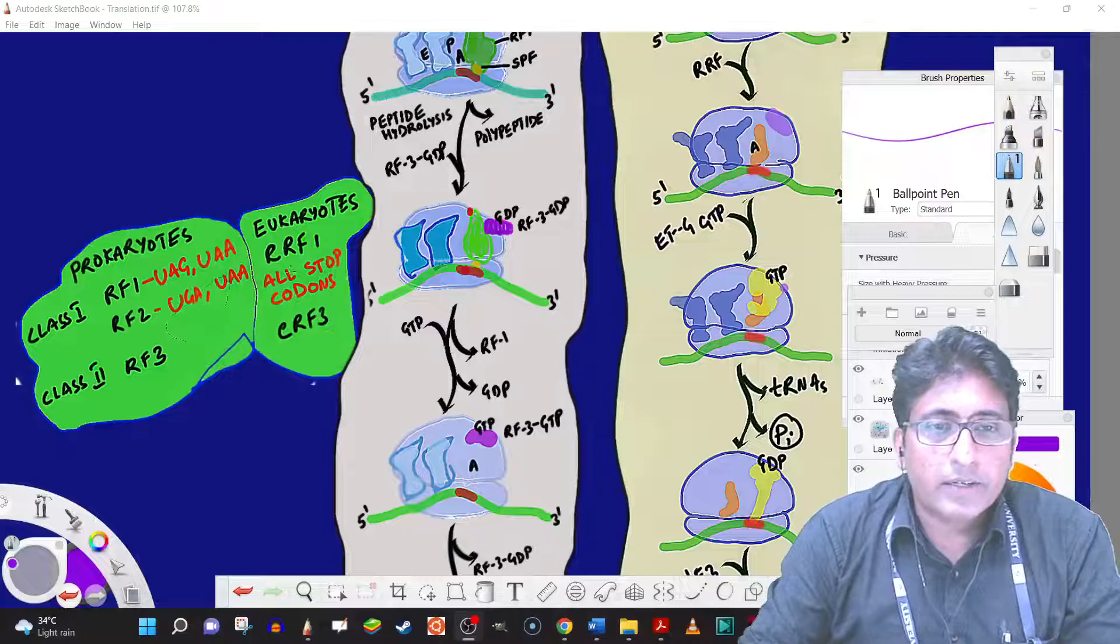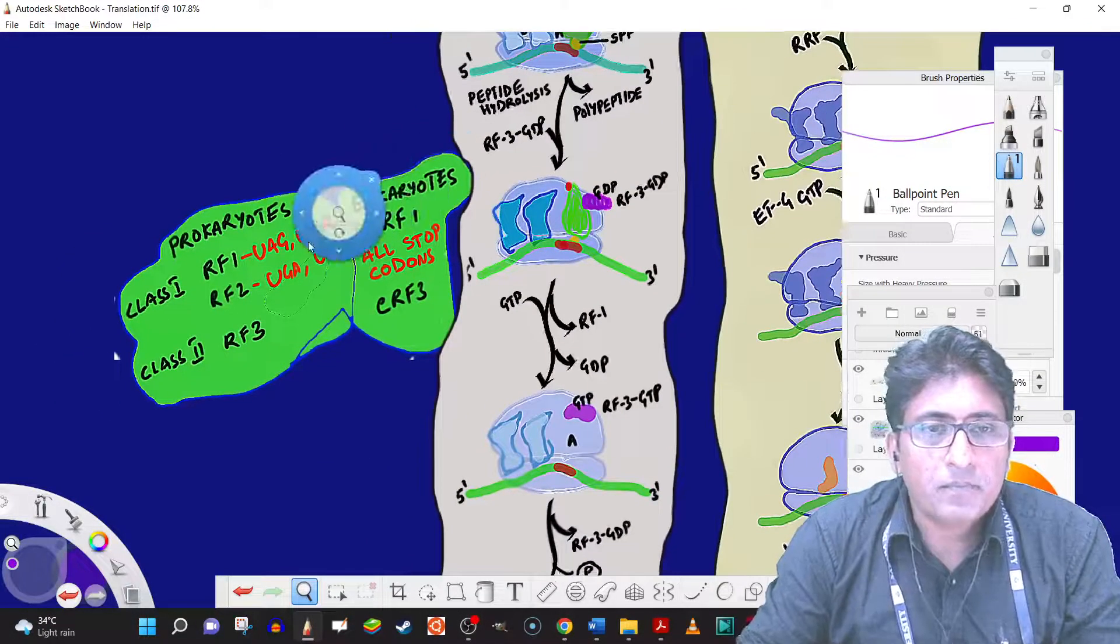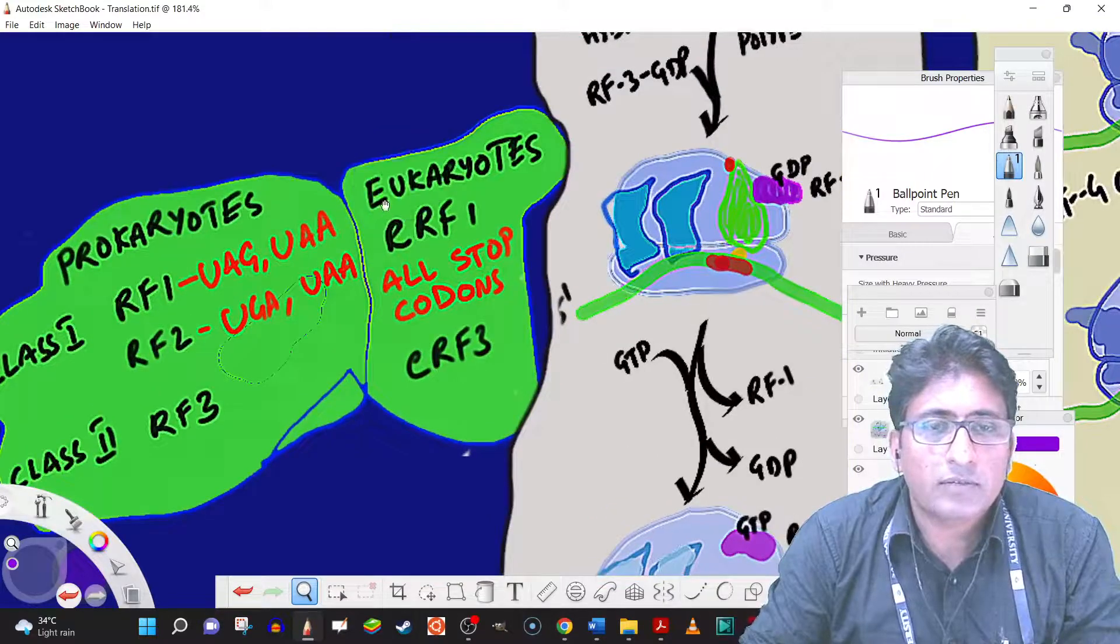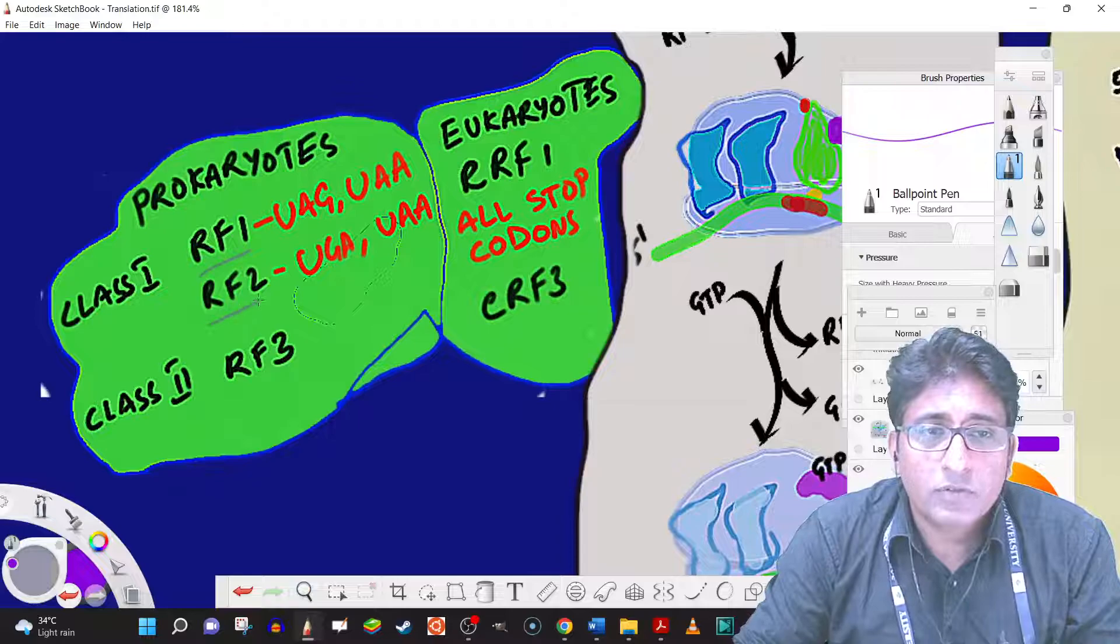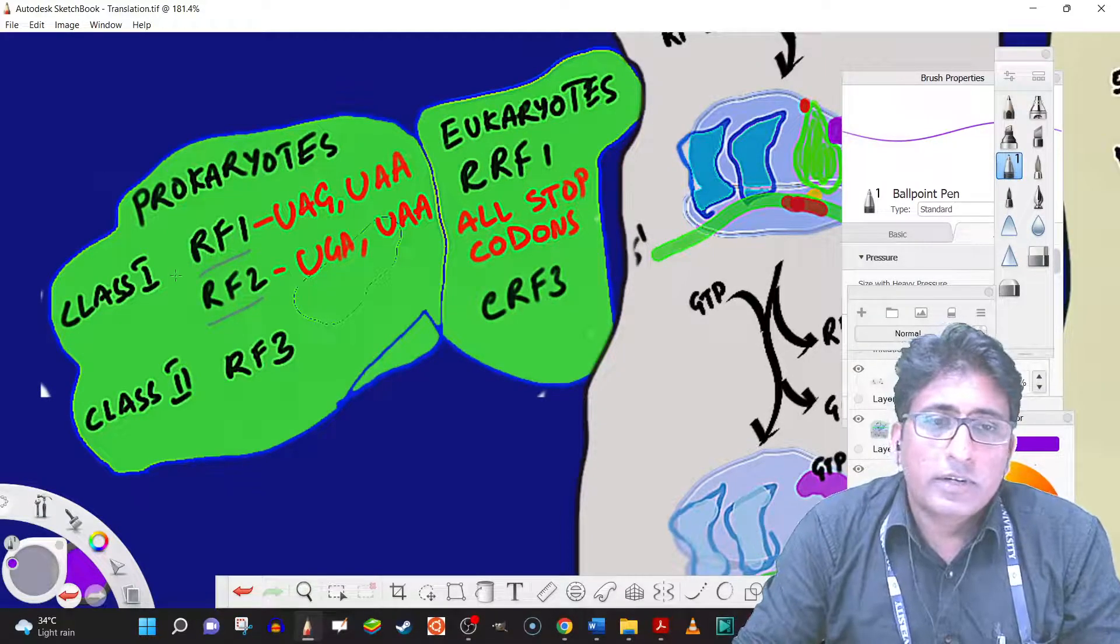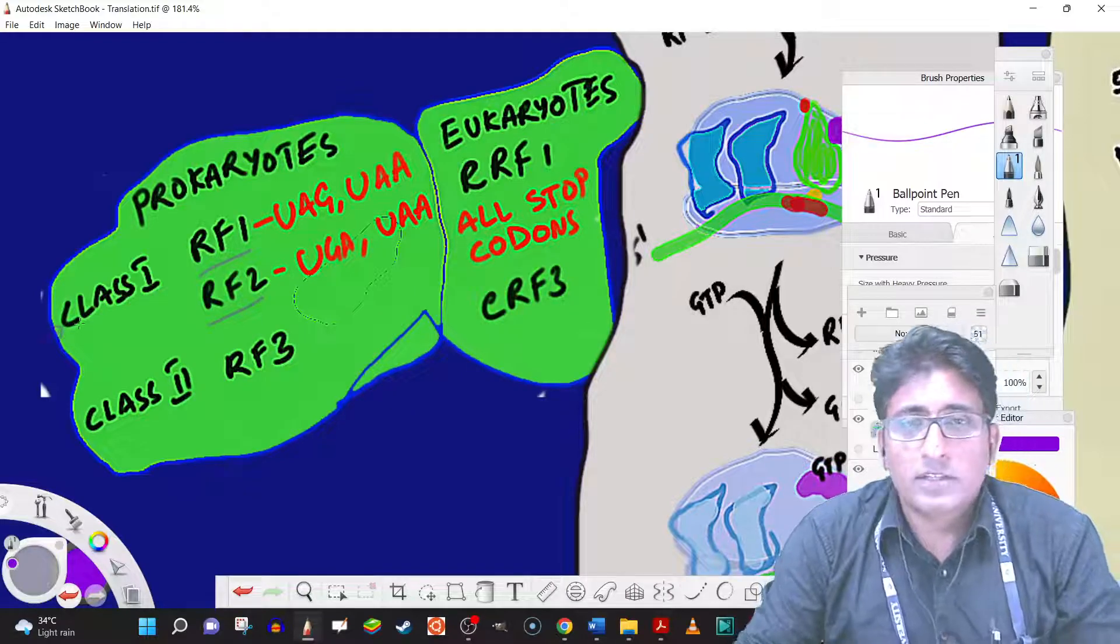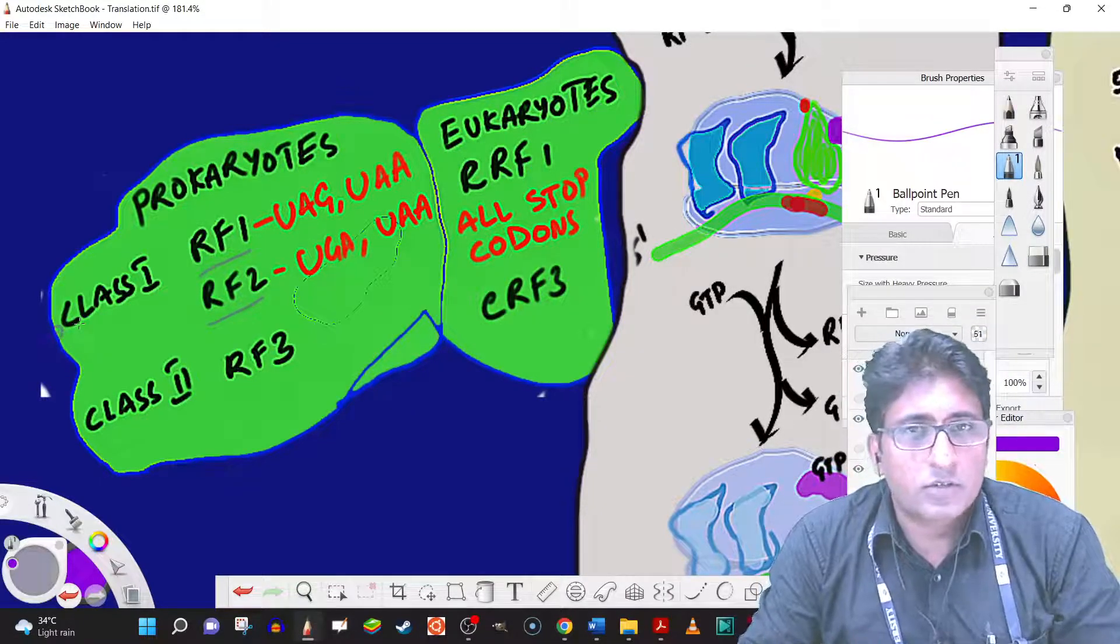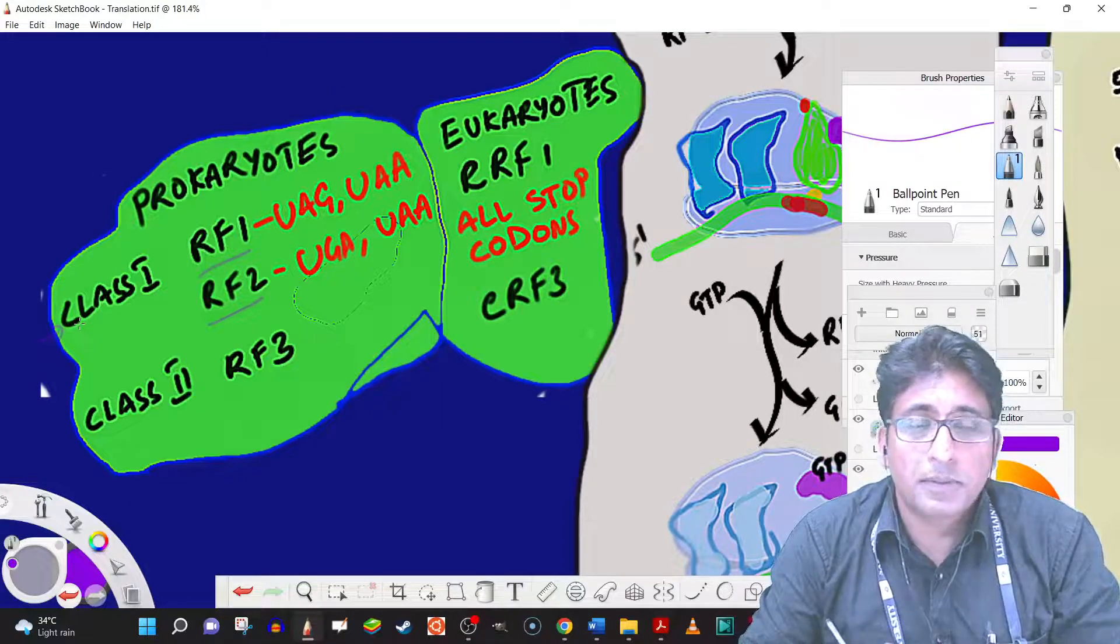In the release factors, we have in prokaryotes, release factor RF1 and RF2. They are called as class 1. Class 1 release factors are actual ones involved in the recognition of the stop codons and also stimulation of the peptide release.